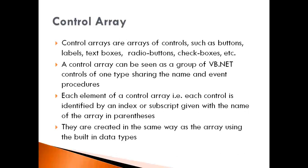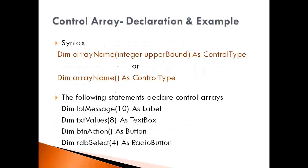The control arrays we are going to create will have the same name and will share event procedures. Each element of a control array — that is, each control — is identified by an index or subscript given with the name of the array in parenthesis. Just as you do in regular arrays, every control that is part of the control array is identified by an index or subscript given in the parenthesis. They are created in the same way as arrays using built-in data types. Here is the syntax for declaring a control array.